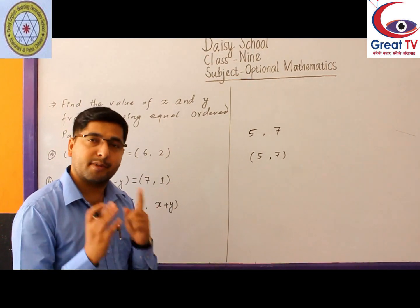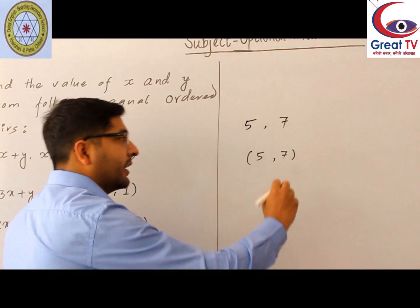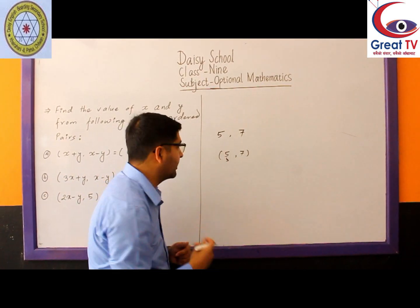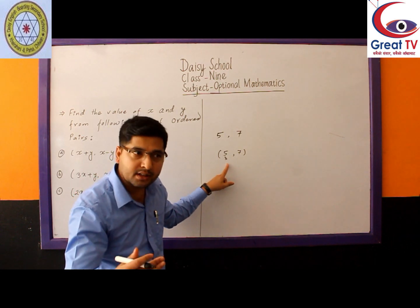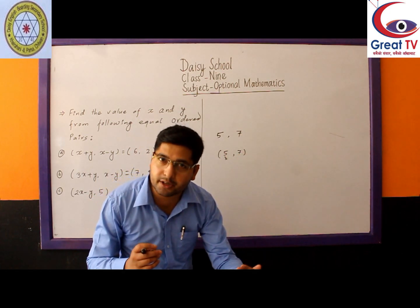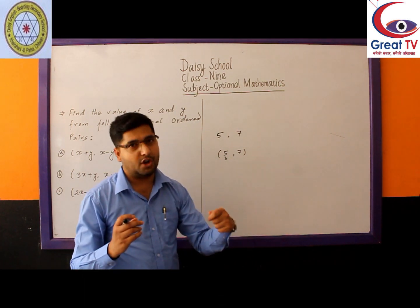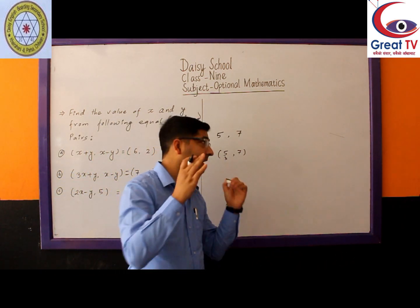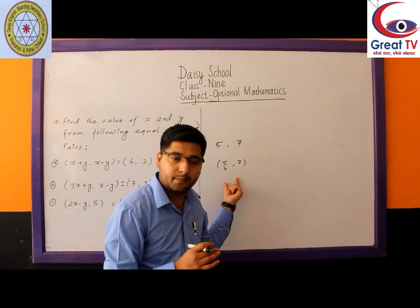In this ordered pair, 5 is known as the X component, first entry, and antecedent. Similarly, 7 is known as the Y component, second entry, and consequent. So, if we write any two numbers inside small brackets separated by a comma, it is known as an ordered pair.